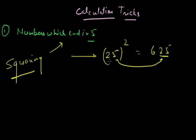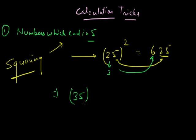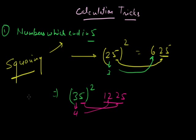The next number to 2 is 3, and 3 times 2 gives 6 — so the answer is 625. For example, 35 squared: 5 squared is 25, and the next number to 3 is 4, and 3 times 4 is 12. So 35 squared is 1225. This is valid when the unit digit is 5.